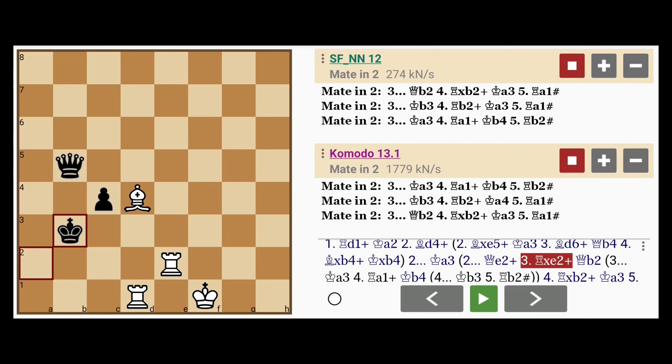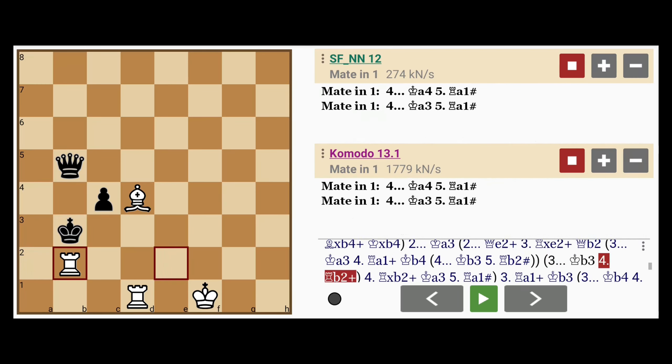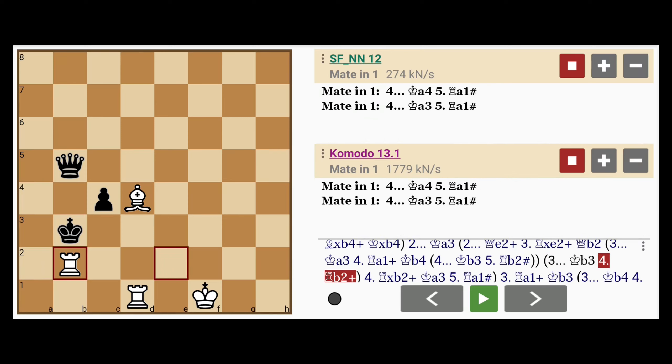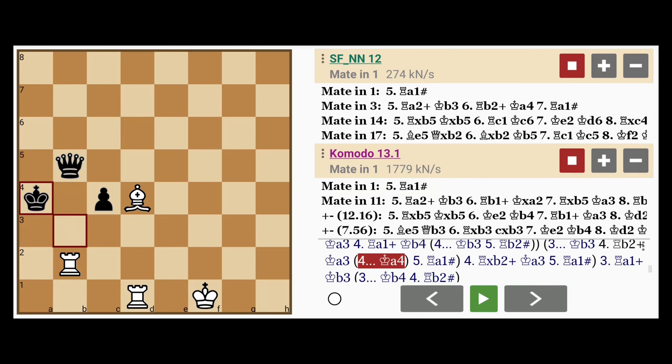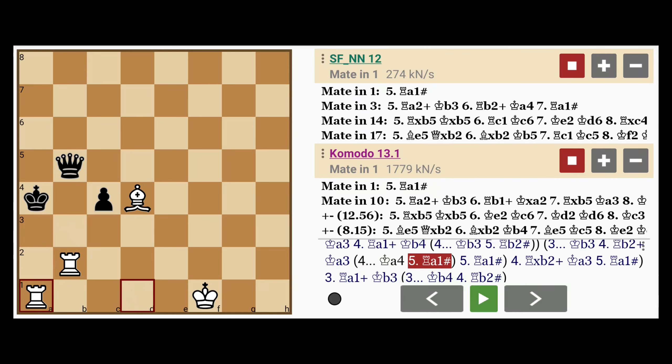And if king to b3 directly, well then rook to b2 check. And the king is forced onto the a file this time. If king to a3, rook to a1 mate. And king to a4, rook to a1 mates as well.